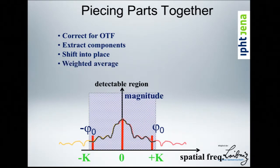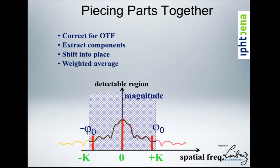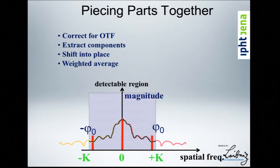Then we do weighted averaging — and this corrects my earlier shortcut. Correcting for the optical transfer function is nice in theory, but the transfer function goes to zero, so dividing by it means multiplying noise by 1,000 near the cutoff — not useful. Instead we do frequency-dependent weighted averaging. Where the black curve's signal is bad (near the cutoff) and the pink curve is good (it came from the center, didn't require much division), we weight by the pink curve heavily, and vice versa.